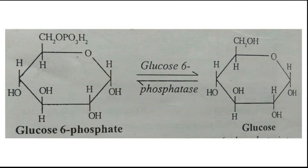In the third step, the conversion of glucose-6-phosphate to glucose takes place in the liver and kidney by the action of the enzyme glucose-6-phosphatase. This enzyme removes the phosphate from glucose-6-phosphate, enabling free glucose to diffuse from the cells. When sugar levels fall, glycogen is converted into glucose.